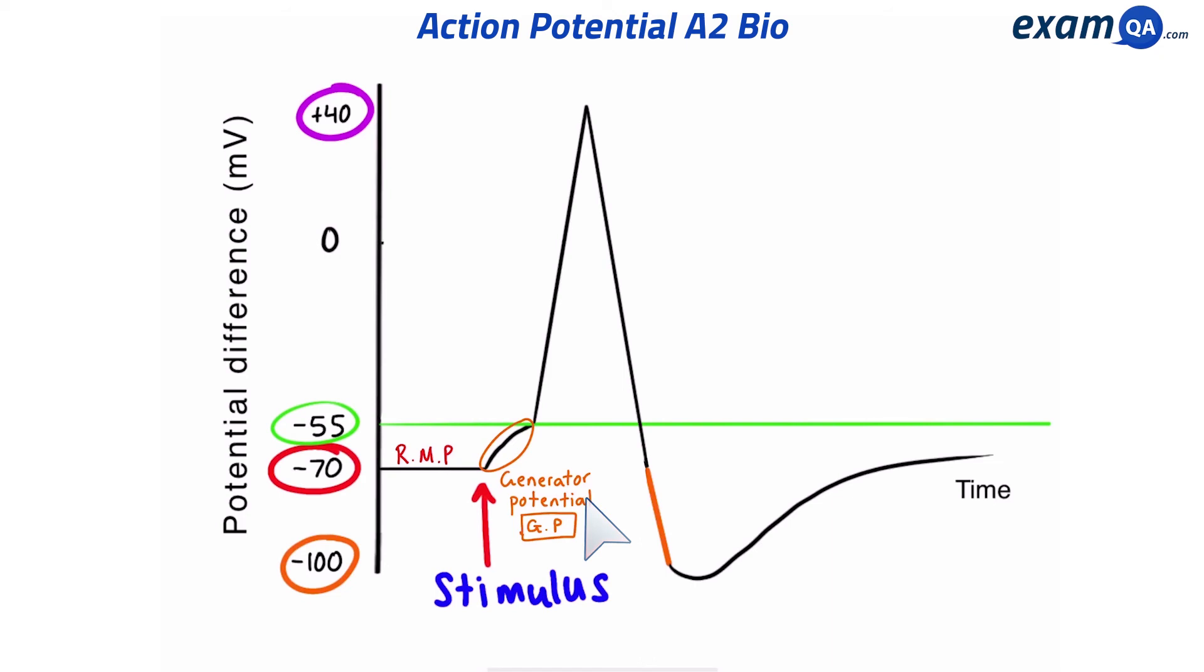Once it hits minus 55 millivolts, many more sodium channels open up, and there's a huge rush of sodium into the neuron. This causes the charge to go from minus 55 all the way to plus 40. And this part is called depolarization.